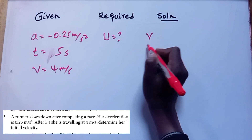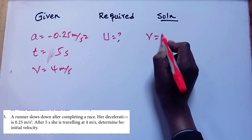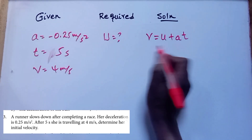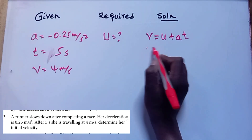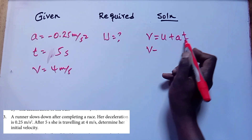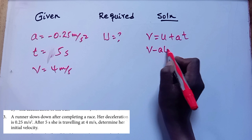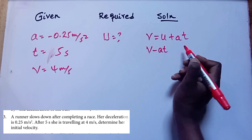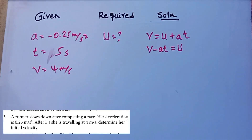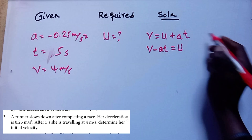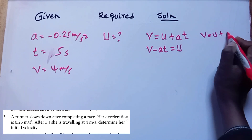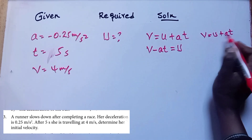Using equation one: final velocity is equal to initial velocity plus acceleration times time. Rearranging for initial velocity: initial velocity is equal to final velocity minus acceleration times time.